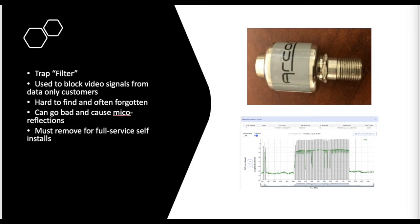Traps — we see them in the plant all the time. Customers use them and then forget they're out there. Full band capture lets us see if customers have traps and how they're working. The example here is a CATV filter — these great little filters allow data-only customers who don't want video. A lot of operators are moving away from traps because we can filter out video using other methods. The problem is if someone says they just want data but we go to DOCSIS 3.1 and the MSO wants to place OFDM at the low end where video used to be — now the trap needs to go away.